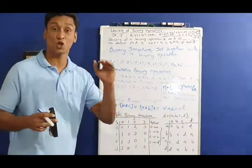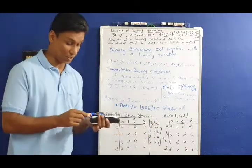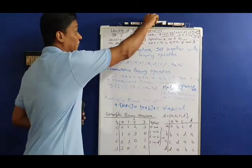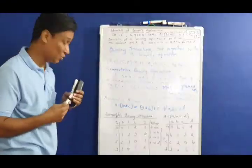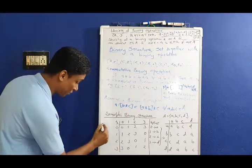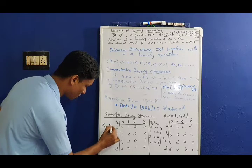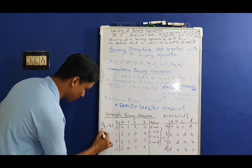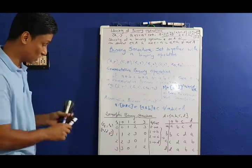This leads to isomorphism — isomorphic binary structures. An isomorphic binary structure is another important definition. For example, consider Z4 under addition modulo 4, where the set is {0, 1, 2, 3}.